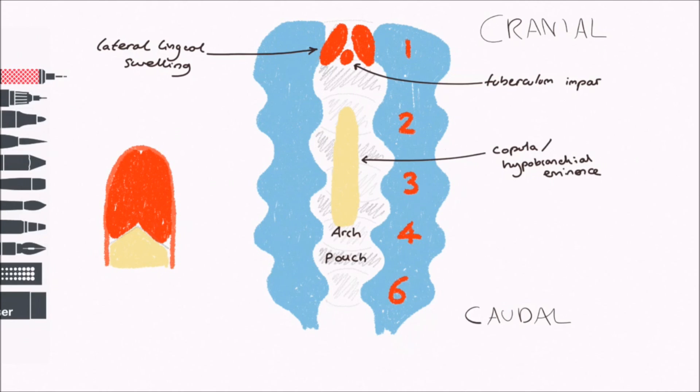Now, the sensory innervation of the tongue is easy to understand. General sensory afferents from the anterior two-thirds of the tongue must be trigeminal, as it is the nerve of the first arch, which is the origin of this portion of tongue.